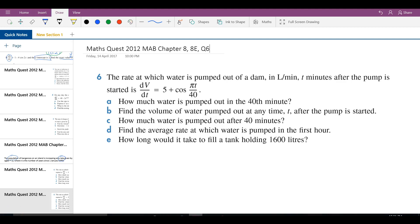Alright, we come to question six. They say the rate at which water is pumped out of a dam in liter per minute, T minutes after the pump is started as dV over dt, the change of volume with respect to the change of time, is equal to five plus cosine pi T over 40. So like always, this is a rate equation in liter per minute as the unit.